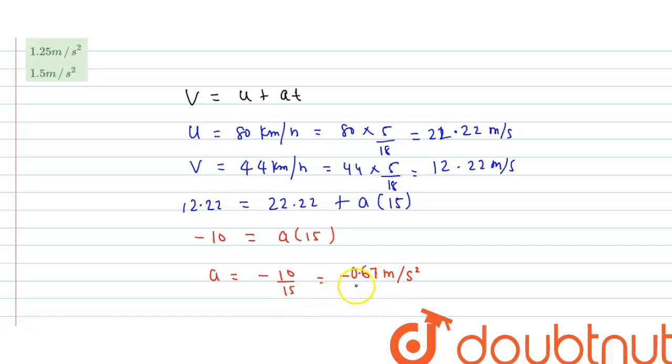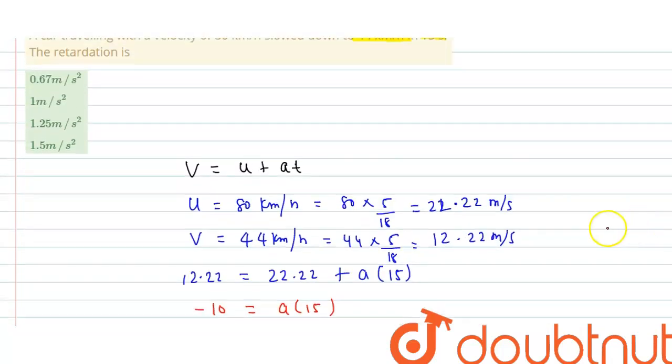So this is acceleration. Retardation is 0.67 meter per second square. So, correct option is 0.67 meter per second square, Option 1.